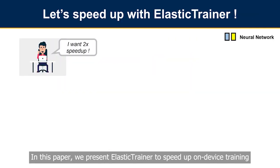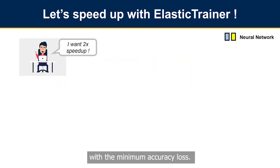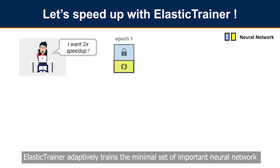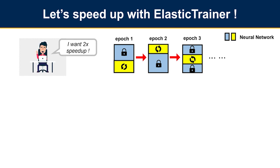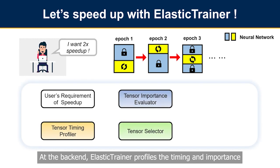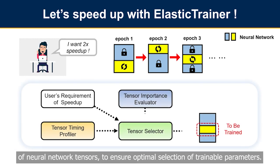In this paper, we present Elastic Trainer to speed up on-device training with minimum accuracy loss. Elastic Trainer adaptively trains the minimal set of important neural network parameters on the fly to satisfy the user's desired speed-up. At the back end, Elastic Trainer profiles the timing and importance of neural network tensors to ensure optimal selection of trainable parameters.